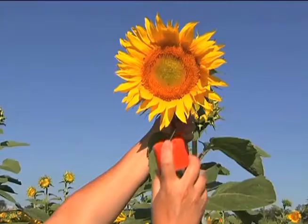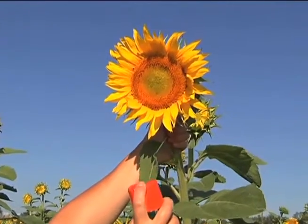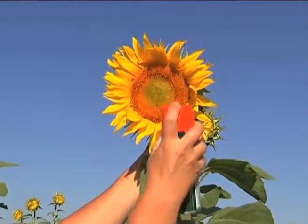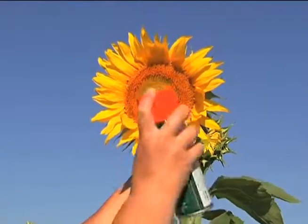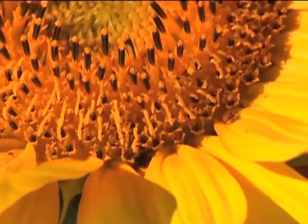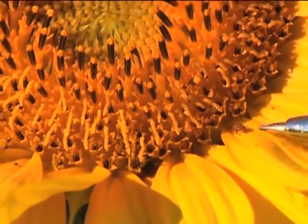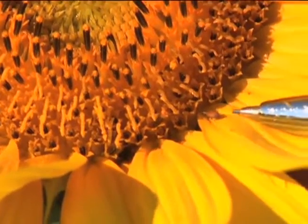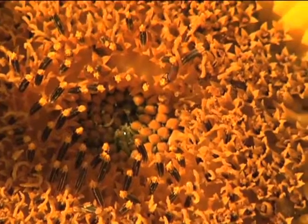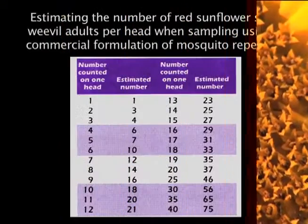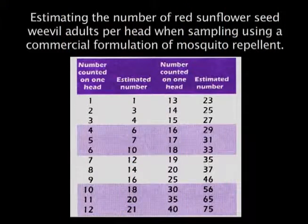You can use mosquito repellent to spray the head. This will force the weevils to move up from the back, and you can see there's one right there on the face of the head. Then use the table to estimate the total number of weevils per plant.